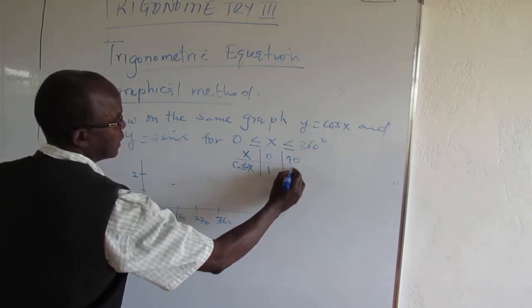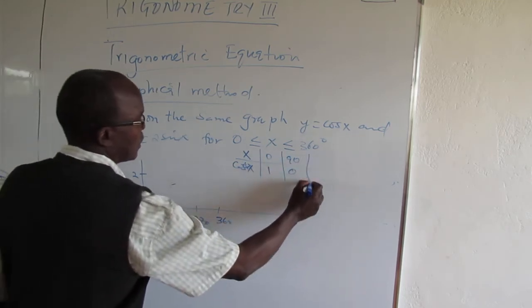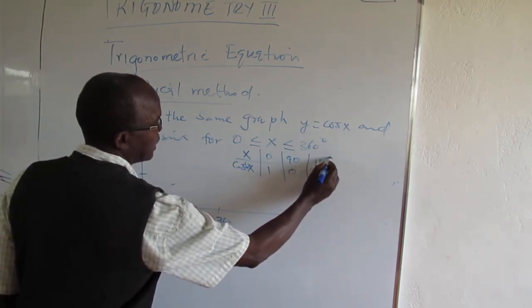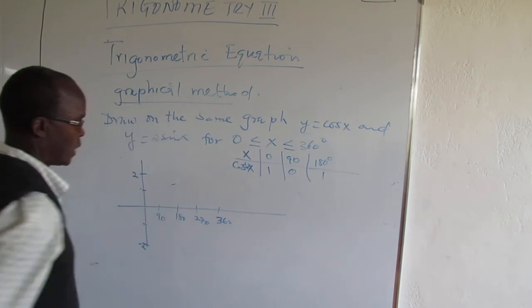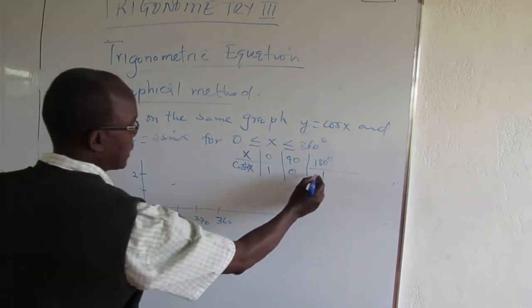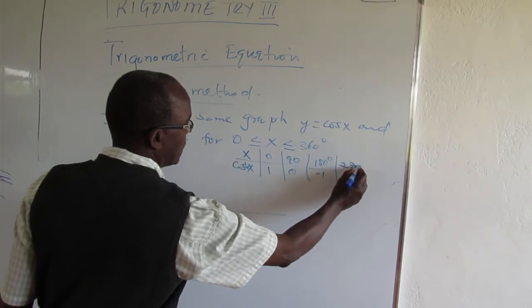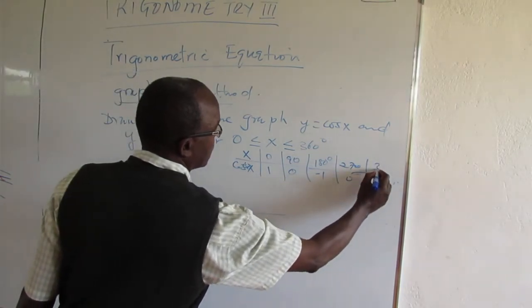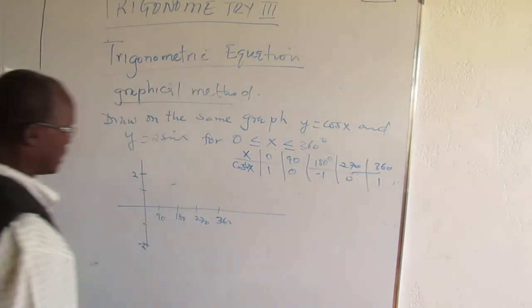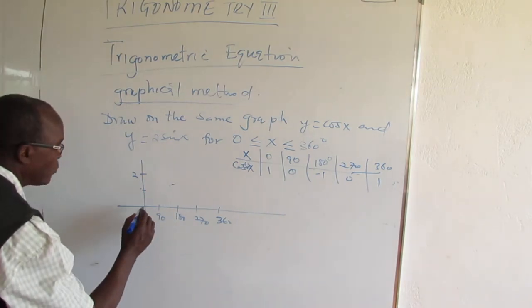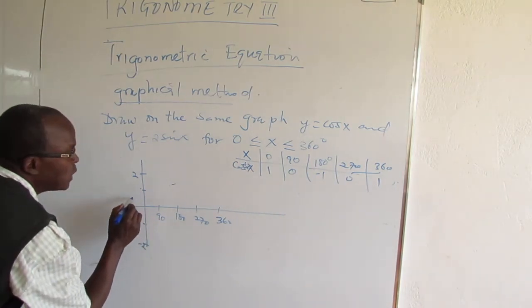For cos x: at 0 degrees it's 1, at 90 it's 0, at 180 degrees it's minus 1, at 270 it's 0, at 360 it's 1, so we can draw it.